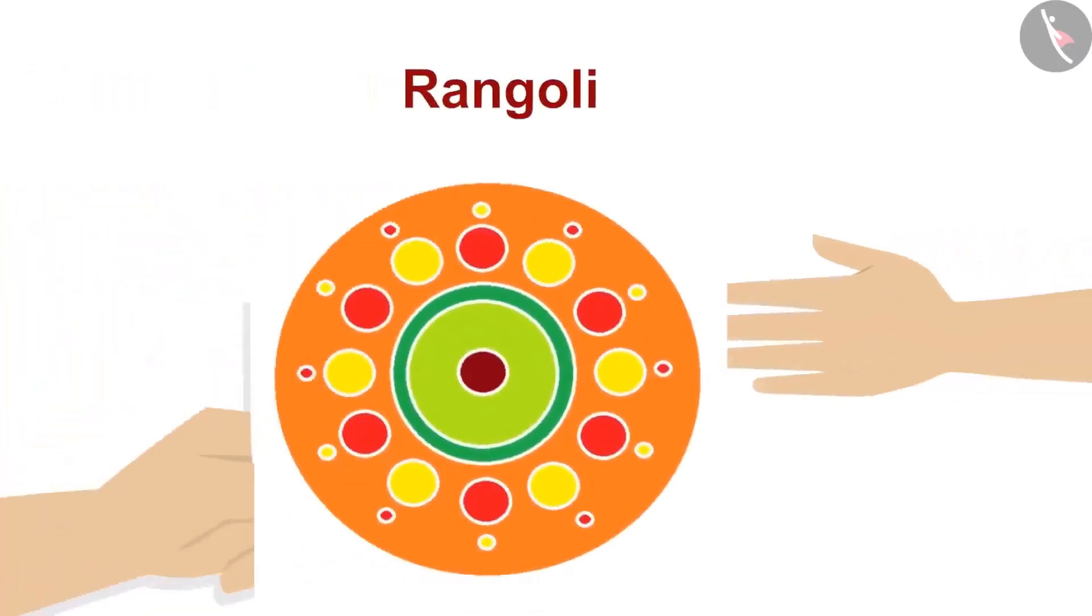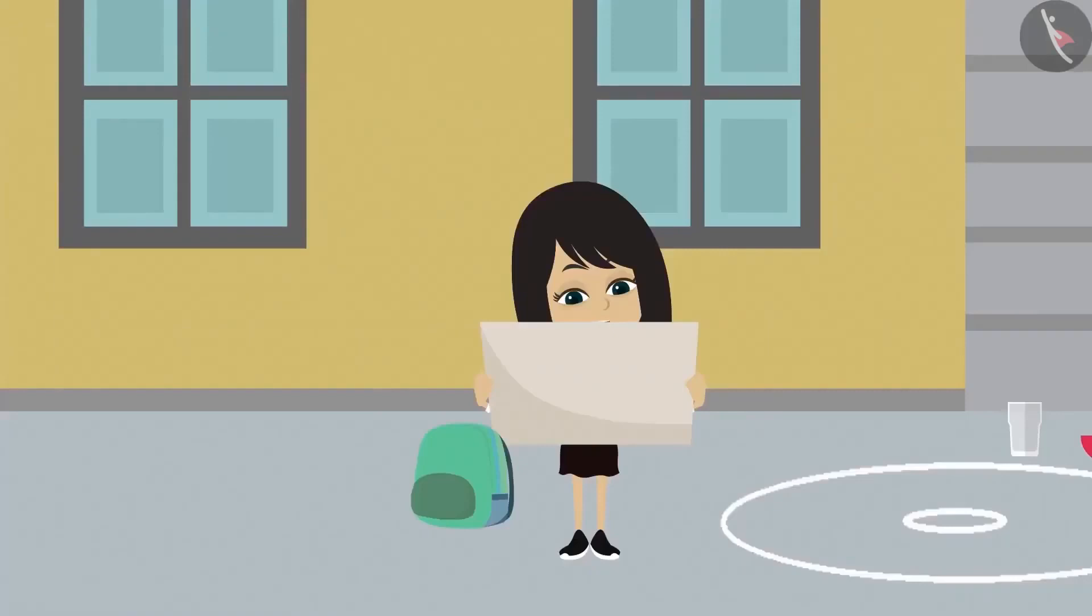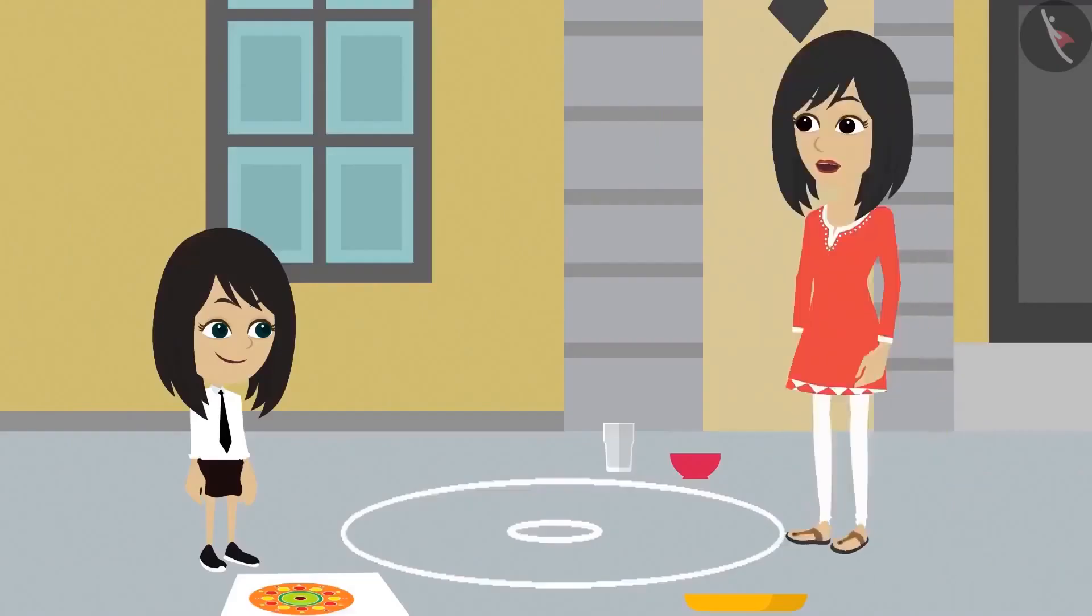I will make the rangoli. You just copy the design from this paper onto the ground with this chalk. There are many circles made in it. Can we make a rangoli with circles? Yes, you can use any shape for the design, and circle is also a shape. Now you make this design. I will go and cook.